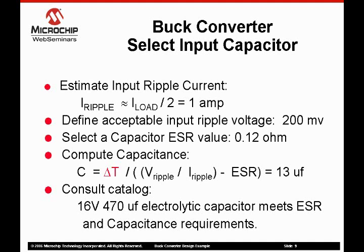Often the input ripple current will exceed the output ripple current. A 16-volt, 470 microfarad electrolytic capacitor that meets the ESR and ripple current requirements is chosen for this example. The estimated power dissipation in the input capacitor is I-ripple squared times ESR, which equals 0.12 watts.